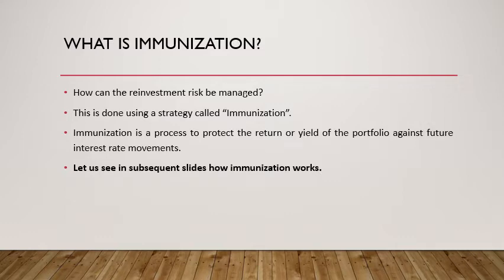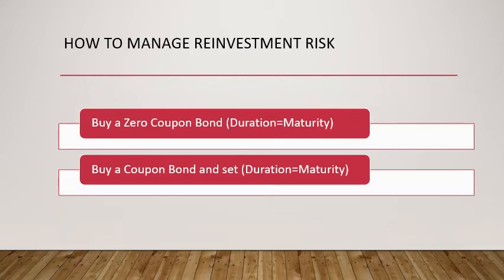Immunization is a process to protect the return or yield of a portfolio against future interest rate movements. To immunize your portfolio you need to build a duration-based strategy. There are two approaches: first, buy a zero coupon bond whose duration equals its maturity by default since you receive no periodic interest. Second, if you are buying a coupon bond with periodic coupon payments, you need to set the duration of the bond equal to your investment horizon or maturity target.